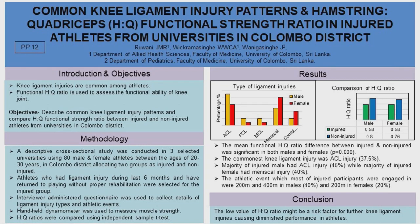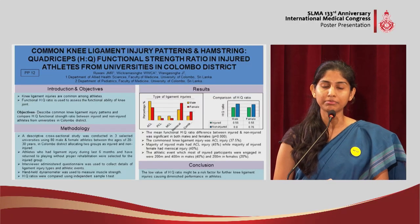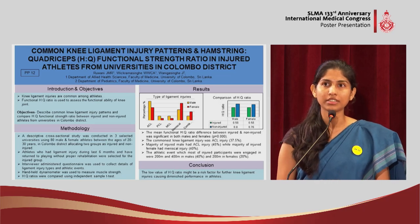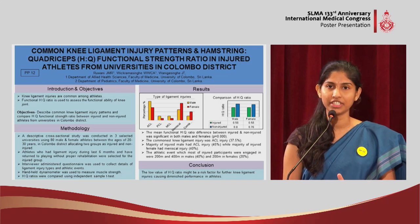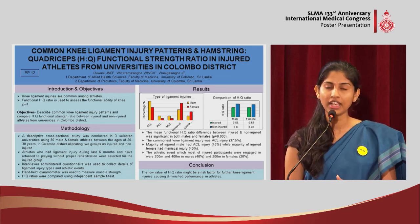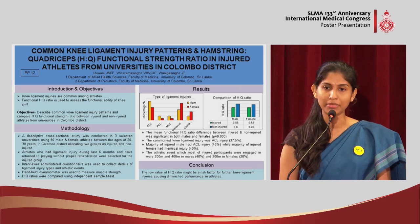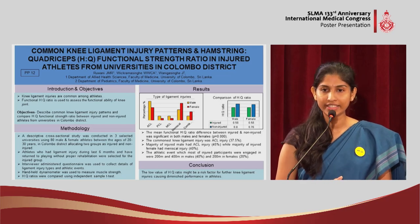A descriptive cross-sectional study was conducted across three selected universities: the University of Colombo, University of Moratuwa, and University of Sri Jayewardenepura. 80 athletes, both male and female, aged 20 to 30 years, were selected and grouped as injured and non-injured. The injured group comprised athletes who had sustained a ligament injury during the last six months and had returned to normal sports activities without a proper rehabilitation process. An interviewer-administered questionnaire was used to gather details on the ligament injury type and the athletic event, and muscle strength was measured using a handheld dynamometer.